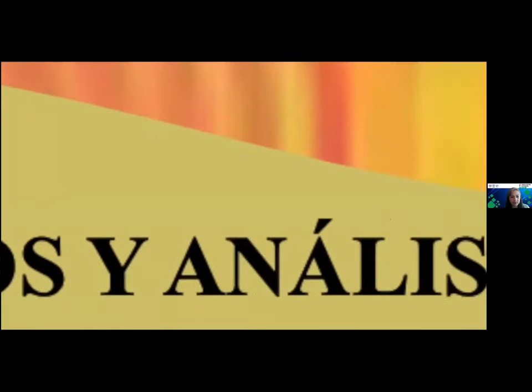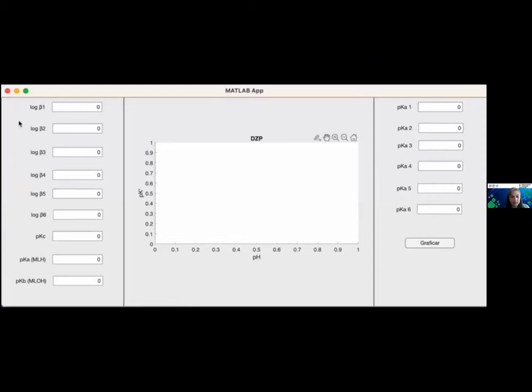Continuamos con los resultados y análisis de los mismos. En esta imagen observamos la pantalla principal del programa. Se divide en tres columnas. En la primera de la izquierda se colocan los valores de las constantes de complejación beta de M con el ion hidróxido, después las constantes de complejación PKC de M con L. Más abajo se encuentra un espacio para escribir las constantes de formación del complejo ML que forma complejos con el ion hidróneo y en el último espacio debe escribirse la constante de formación del complejo ML con el ion hidróxido. En la columna siguiente se muestra el gráfico del menos logaritmo de la constante condicional contra el pH. Por último, en la tercera columna debe escribirse las constantes de formación sucesivas de L con el ion hidróneo que suelen llamarse PK. En la parte derecha hasta abajo se muestra el botón graficar.